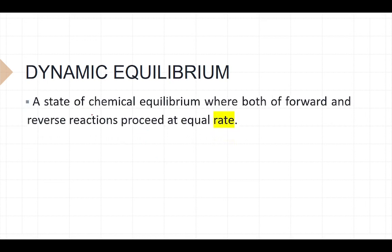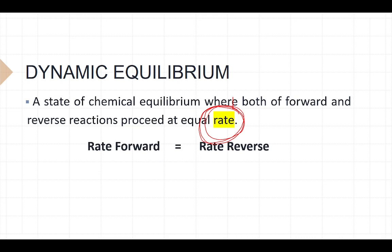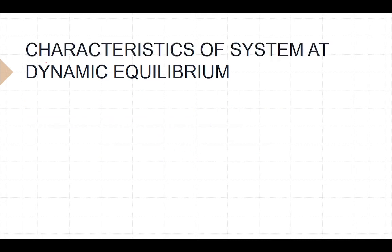Now, dynamic equilibrium. Dynamic equilibrium is a state of chemical equilibrium where both the forward and reverse reactions proceed at equal rates. This is important — the rate of the forward reaction equals the rate of the reverse reaction.